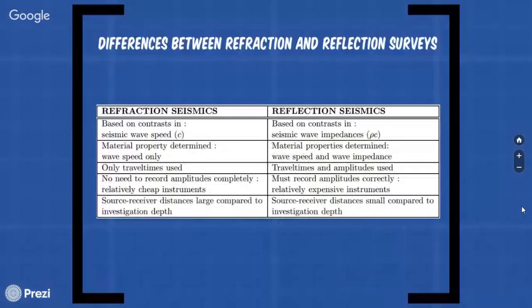Let's move to differences between refraction and reflection surveys. In refraction seismic survey, it is based on contrast in seismic wave speed, while reflection seismic survey is based on contrast in seismic wave impedances. In refraction seismic, material property determines wave speed only. In reflection seismic, wave speed and wave impedances are determined. In refraction seismic survey only travel time is used. In reflection seismic survey we also use amplitude. In refraction seismic survey no need to record amplitudes completely. Therefore, it is relatively cheap instrumentation.